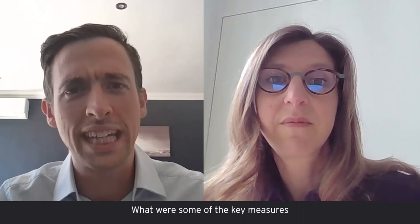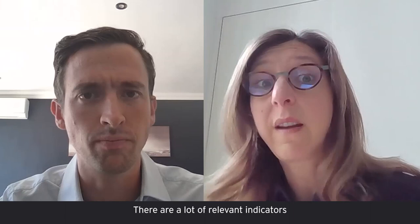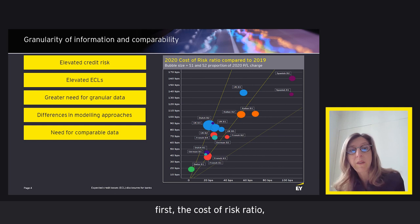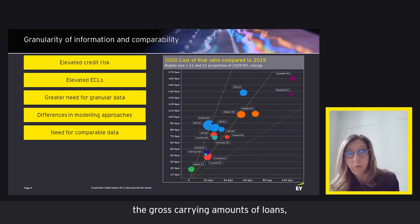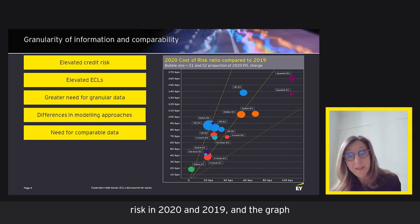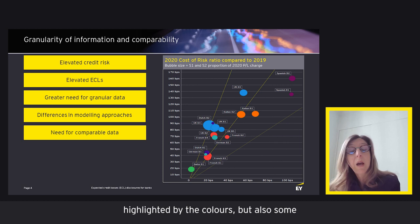There are a lot of relevant indicators to track and we are all still on a learning curve to find the right ones. Some primary indicators include first the cost of risk ratio, which is the level of the ECL charge for the period divided by the gross carrying amounts of loans. This allows comparisons between banks with different portfolio sizes. As the graph shows, there are interesting country trends but also significant differences amongst banks.